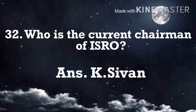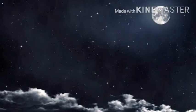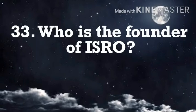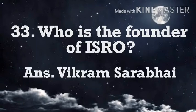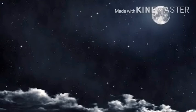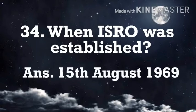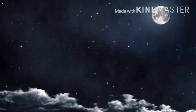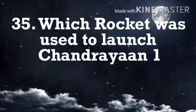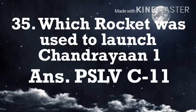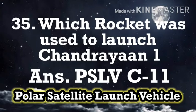Who is the current chairman of ISRO? K. Sivan. Who is the founder of ISRO? Vikram Sarabhai. When was ISRO established? 15th August 1969. Which rocket was used to launch Chandrayaan 1? PSLV C-11. Full form of PSLV — Polar Satellite Launch Vehicle.